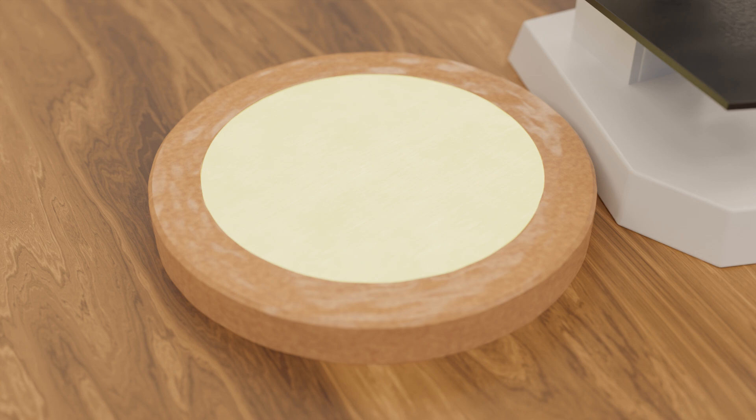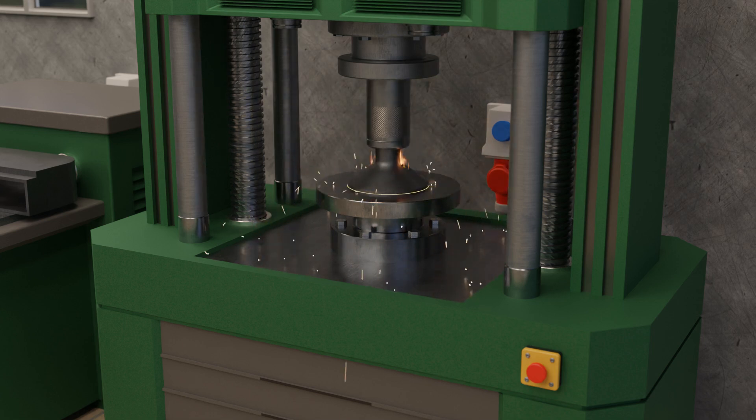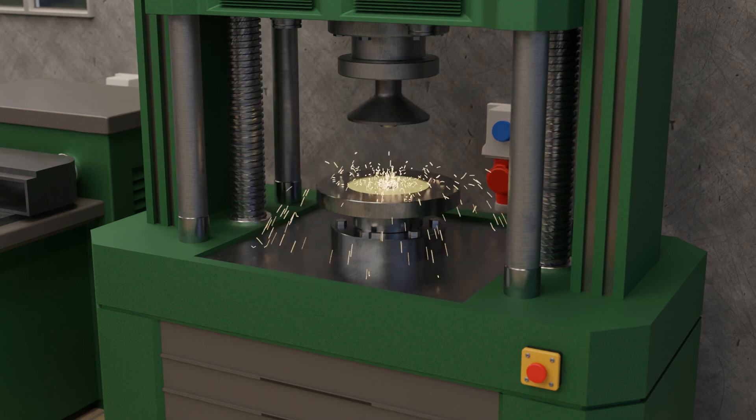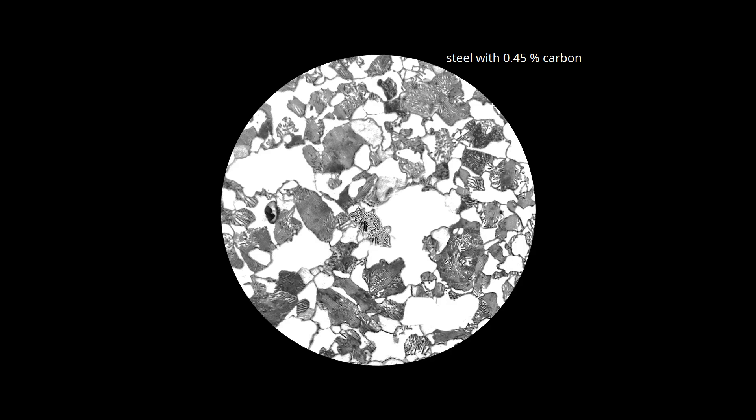A heterogeneous microstructure can occur not only during solidification but also, for example, during forging, because at high temperatures the grain boundaries shift due to diffusion processes and the grains can fuse together. This results in the formation of new grains, leading to the formation of both small and large grains, resulting in a heterogeneous structure. The same phenomenon can also occur in welded components in the heat-affected zone.